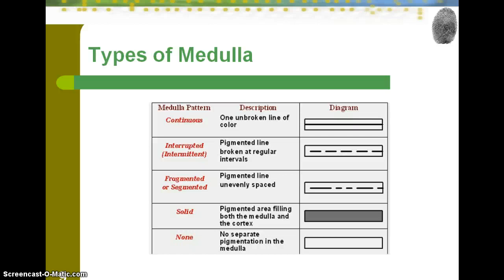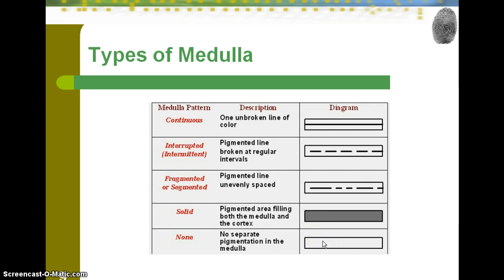These are the different types of medullas you can see among different individuals, all of which are human — there's that amount of variation. There's a continuous medulla, an interrupted medulla that looks like a dotted line, a fragmented or segmented medulla that can be variable in the types of dots and line interruptions, a solid medulla, and then no medulla at all.